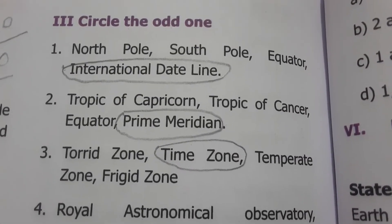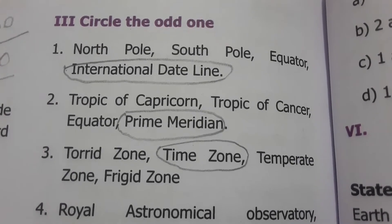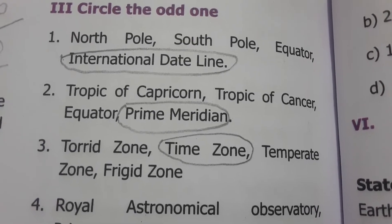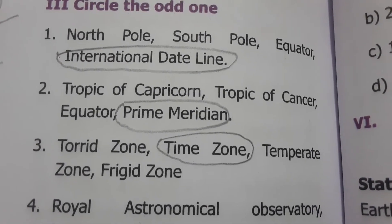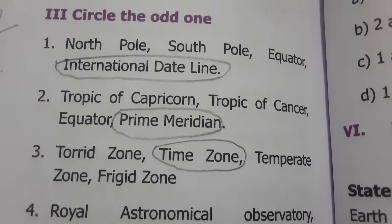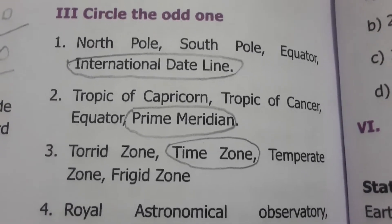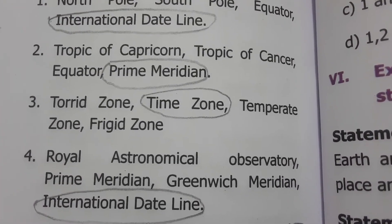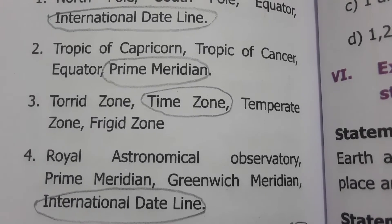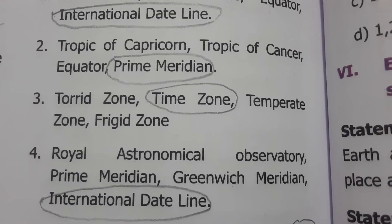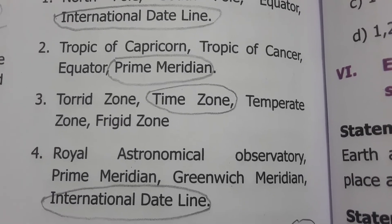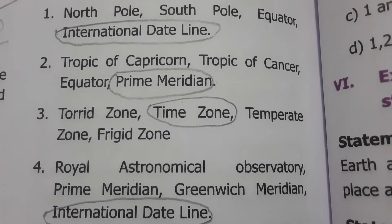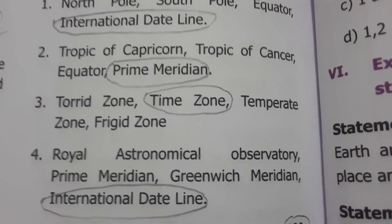Circle the odd one out. First set: North Pole, South Pole, equator, and International Date Line — North Pole, South Pole, and equator are all used for locating positions on Earth, whereas the International Date Line is used to determine the date. Second set: Tropic of Capricorn, Tropic of Cancer, equator, prime meridian — the first three are latitude lines, whereas the prime meridian is a longitude line, so prime meridian is the odd one.